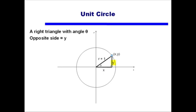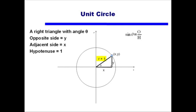The side opposite my angle theta is y. The side adjacent to theta is x, and the hypotenuse is r. In this case my hypotenuse is length 1 because we're using a unit circle. Once I have my sides in terms of opposite, adjacent, and hypotenuse, I should immediately think of my trig functions.